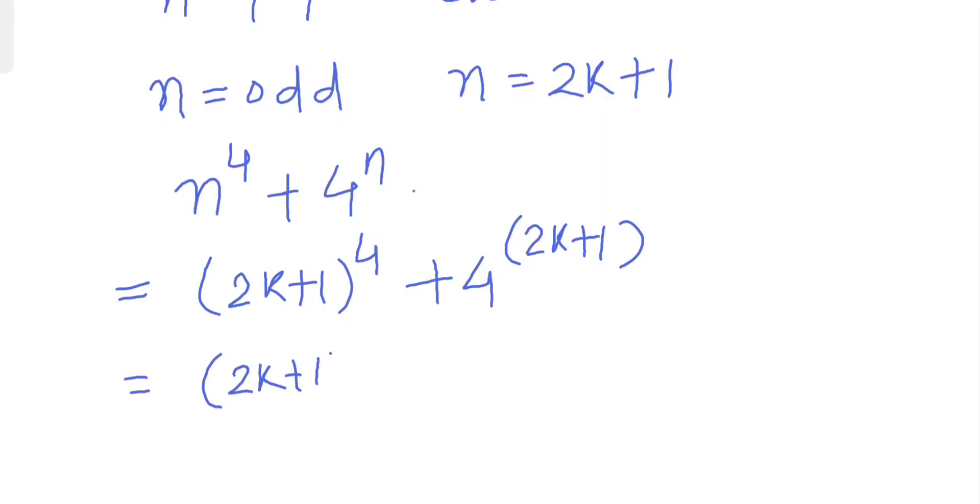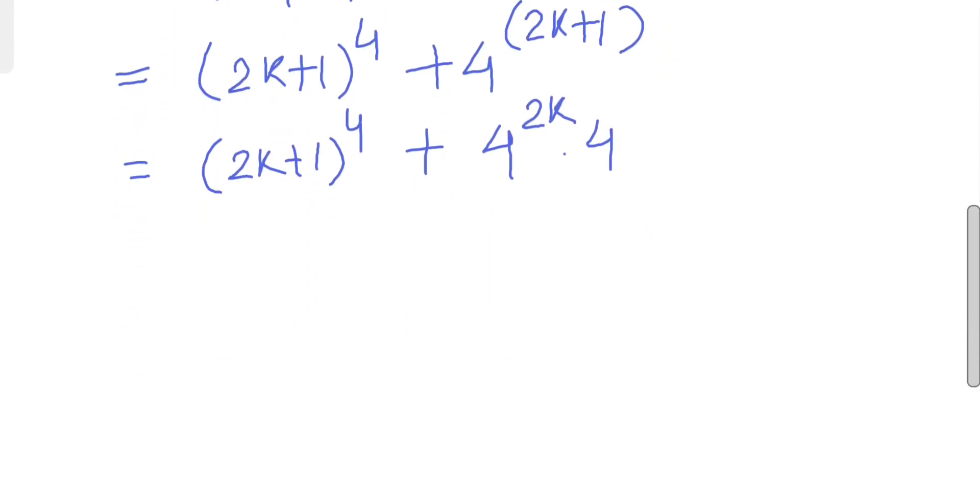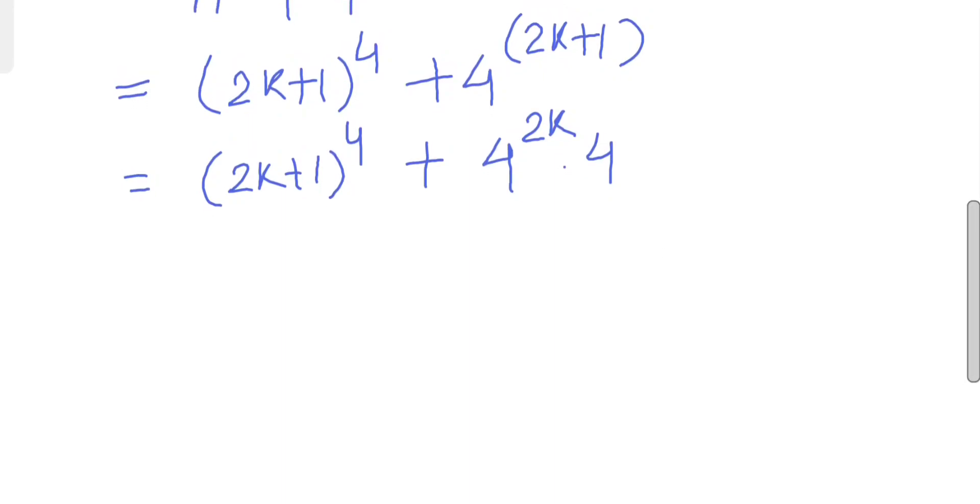We can write this as (2k plus 1) to the power 4 plus 4 times 4 to the power 2k, which is (2k plus 1) to the power 4 plus 4 times (2 to the power k) to the power 4.